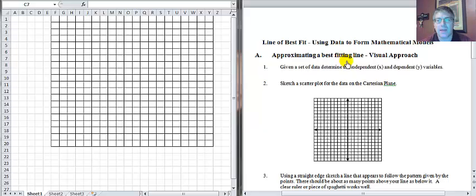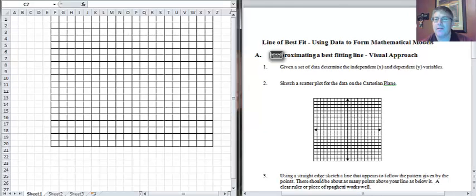This is line of best fit using the visual approach. Given some set of data we are going to create a scatter plot. We might have some ordered pairs and create some data with points on the Cartesian plane.